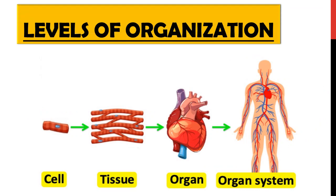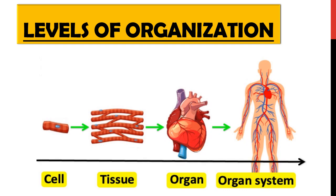Cell is a basic unit of the body, and here we have the levels of organization. A group of cells come together to form tissues, and tissues form specific organs — like the heart shown here. Different organs come together to form organ systems, and then a complete organism is formed.